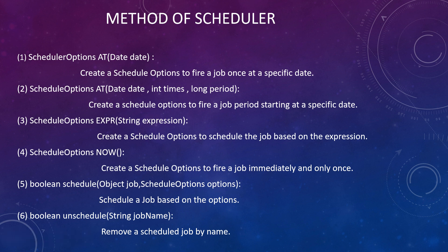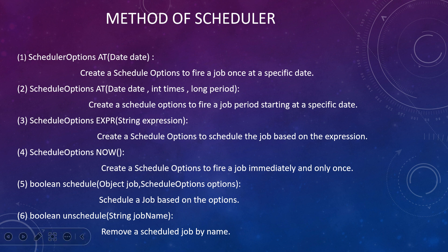These four methods are used only for defining the schedulers. If you actually want to trigger it, you need to use the scheduler's schedule method. You pass the job — the object you want to execute — and the ScheduleOptions which defines when you want to execute. The ScheduleOptions returns from these definition methods.